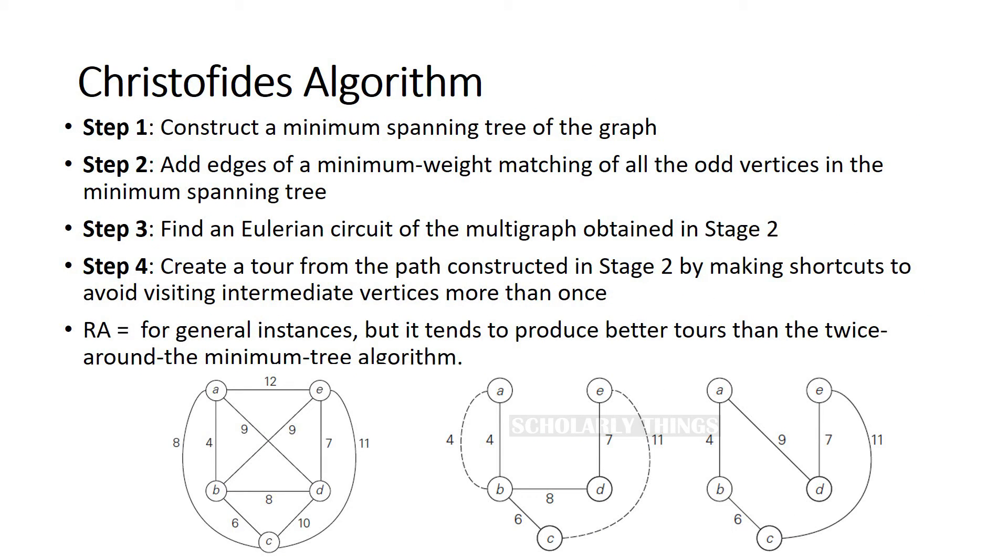Christofides algorithm. For this, we need to know what is an Eulerian circuit. Eulerian path is a path in a graph that visits every edge exactly once. Eulerian circuit is an Eulerian path which starts and ends at the same vertex.